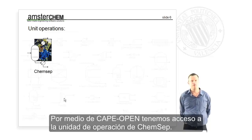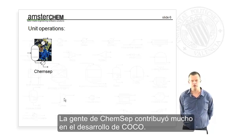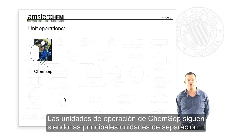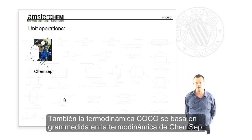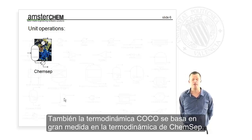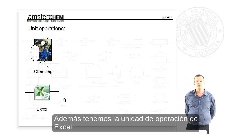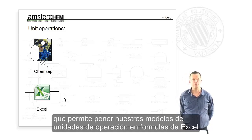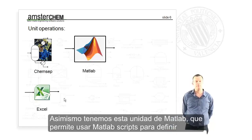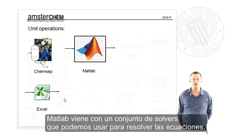Via CAPE-OPEN we have access to the ChemSep unit operation. The office of ChemSep contributed tremendously to the development of COCO, and the ChemSep unit operation is still the main separation device, providing separation and absorption columns. The thermodynamics in COCO are still largely based on ChemSep thermodynamics and thermodynamic data. In addition, we have the Excel unit operation, which allows you to put your unit operation model equations in Excel and use the Excel solver. Similarly, we have a MATLAB unit operation that lets you use MATLAB scripts and MATLAB's suite of solvers to solve your equations.